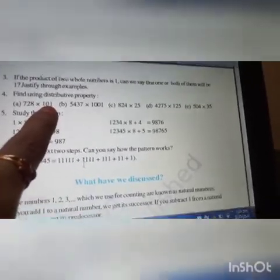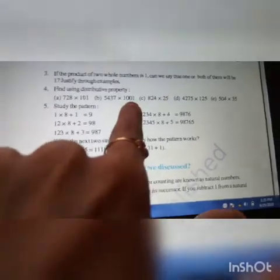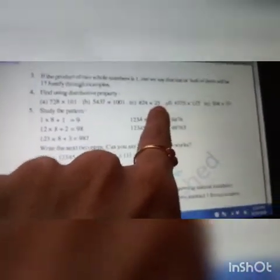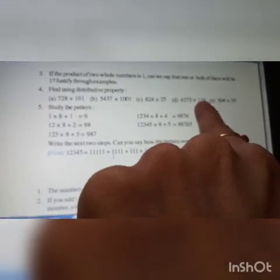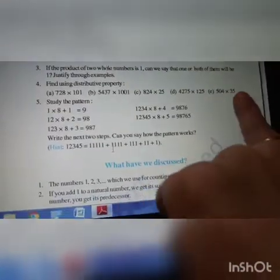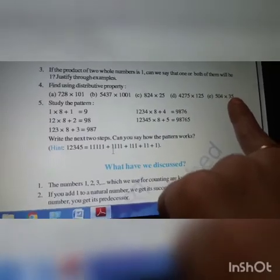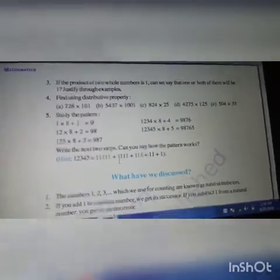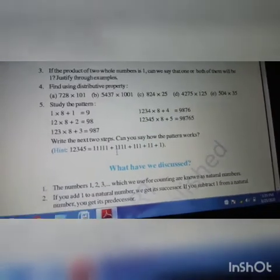This question using distributive property. 101. How we will write? 100 plus 1. 1001. 1000 plus 1. 25. 20 plus 5. 125. 100 plus 25. 35. 30 plus 5 you can do. Only that's all this exercise or this chapter over. You can take your rough note and start working out the problems.